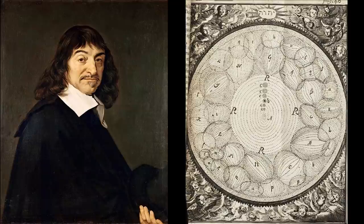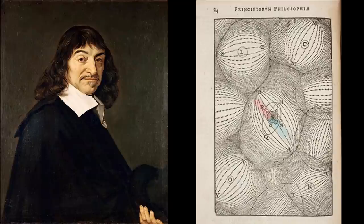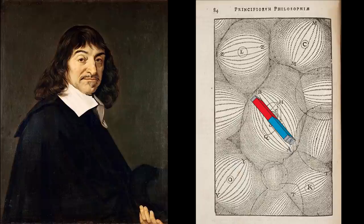Descartes attempted to account for magnetic phenomena by his theories of vortices, adopting suggestions of Gilbert's and postulated a vortex of fluid matter around each magnet. The matter of the vortex entered by one pole and leaving by the other. The matter was supposed to act on iron and steel by virtue of a special resistance to its motion, a property unique to these materials.